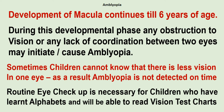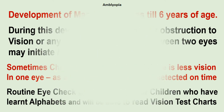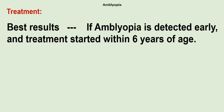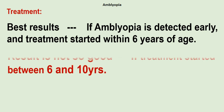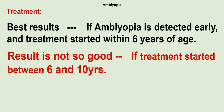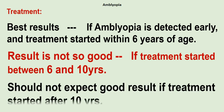Treatment: The best results are seen if amblyopia is detected early and treatment is started within six years of age. Results are not so good if treatment is started between six and ten years. One should not expect good results if treatment is started after ten years of age.